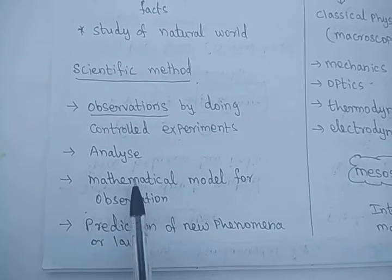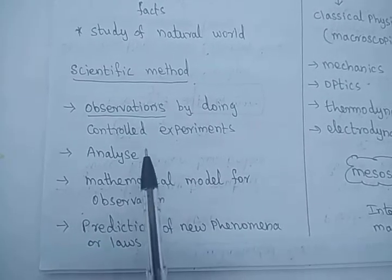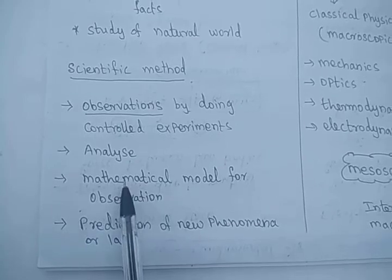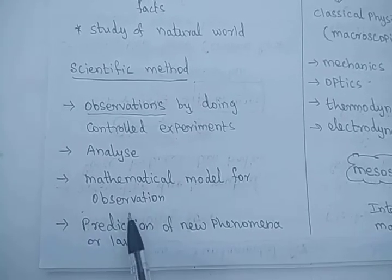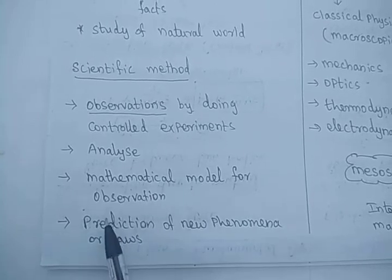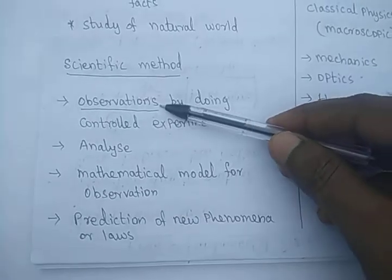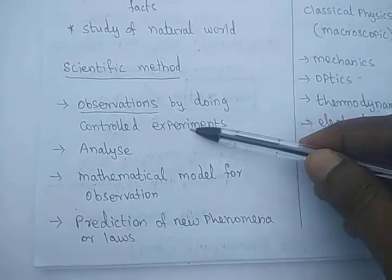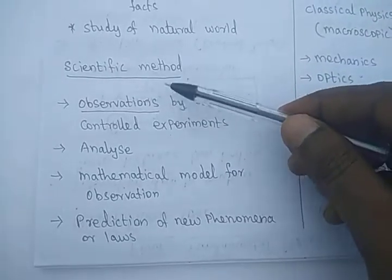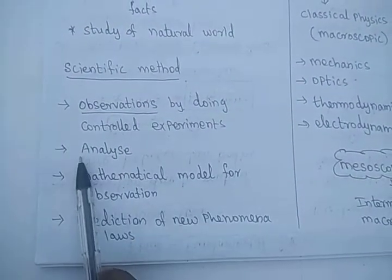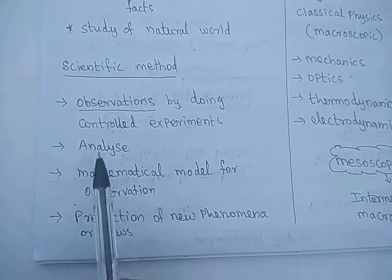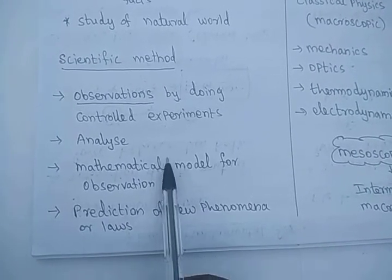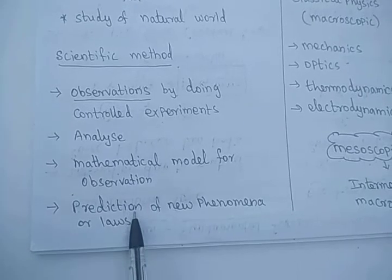By analyzing the observable data, they frame a mathematical model or mathematical expression. Mathematics is very, very important in science, more particularly in physics, because physics is a main branch of science — mathematics is the queen of science. We have to study science through mathematical models. By observing facts, collecting data, and analyzing the data, we frame a mathematical model. That is a theory, and by using this mathematical model we predict that phenomena.